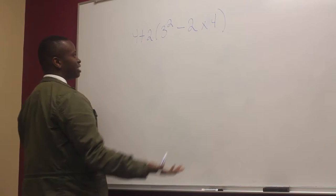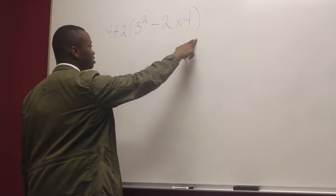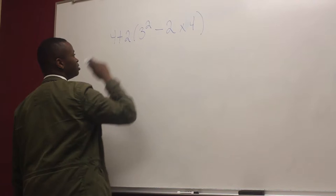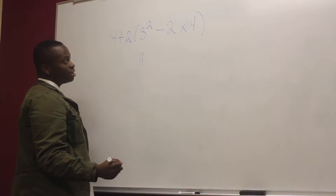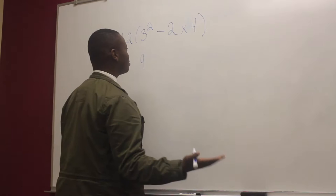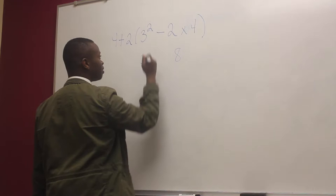So you're going to start and look to see if you have parentheses, and you notice that you do, so you're going to start within the parentheses. Within the parentheses you see an exponent, which you do first. So you simplify three squared, which equals nine, and then you do multiplication first, which gives you eight. So now your new problem within the parentheses is nine minus eight.